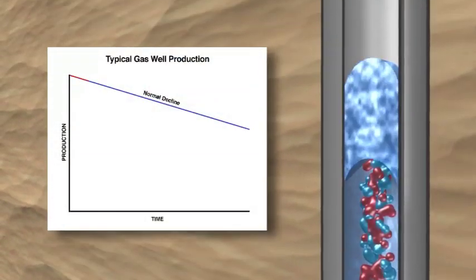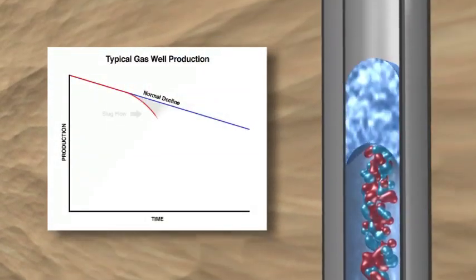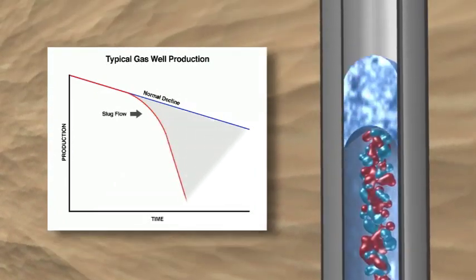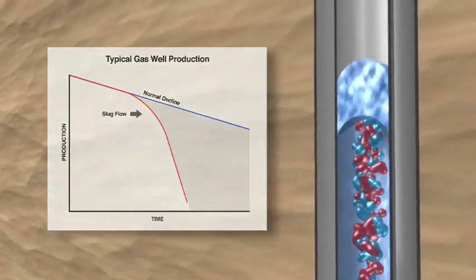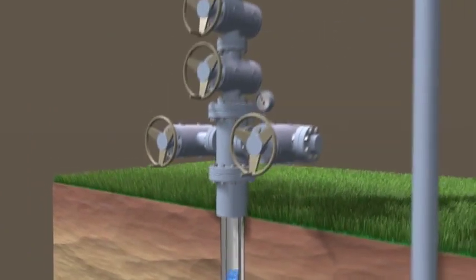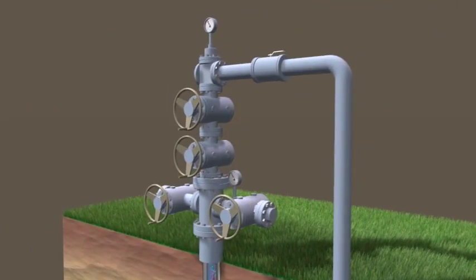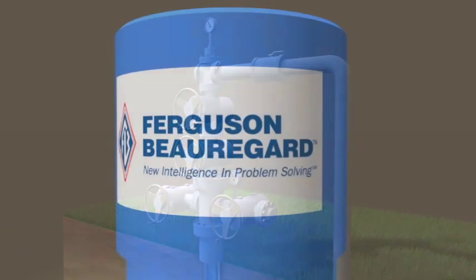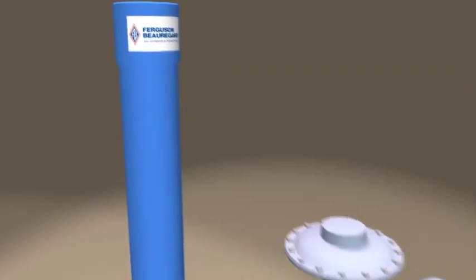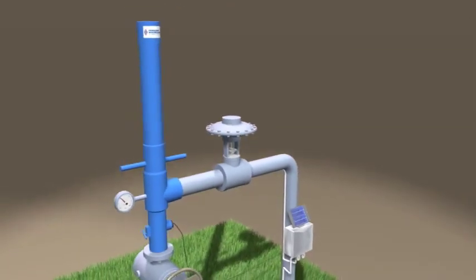This chart depicts a typical well's production decline. As soon as slug flow returns, production falls dramatically. You can't count on intermitting alone to take a well to economic depletion, but you can count on Ferguson Beauregard to come up with the breakthrough technology that makes the difference.